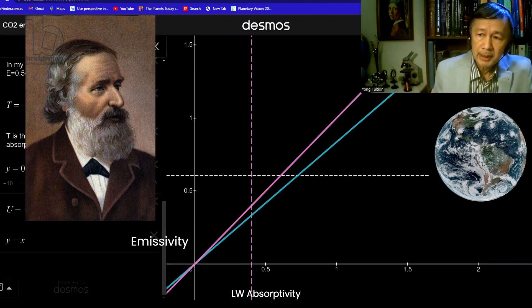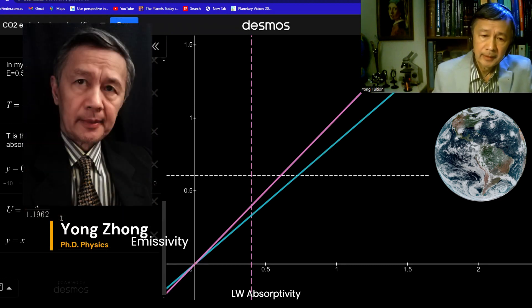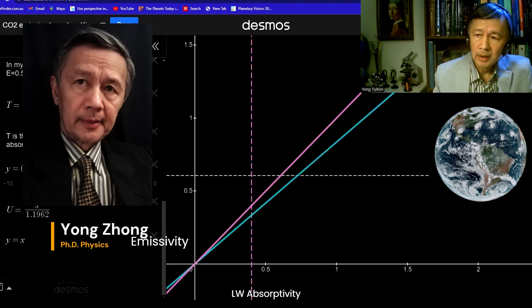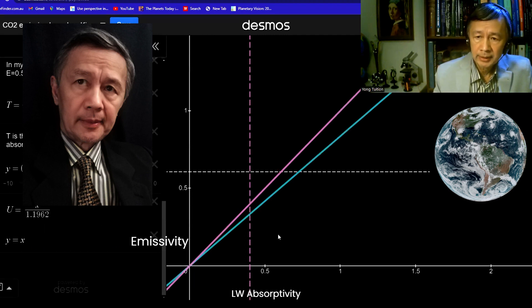In my published work, I modified Kirchhoff's law by adding a factor of 1 over 1.1962, as shown in this green color straight line.